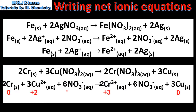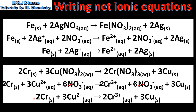In this reaction chromium has been oxidized and copper 2+ ions have been reduced. The nitrate ion is the spectator ion. So once the spectator ions have been cancelled out we are left with the net ionic equation, which we can see here.